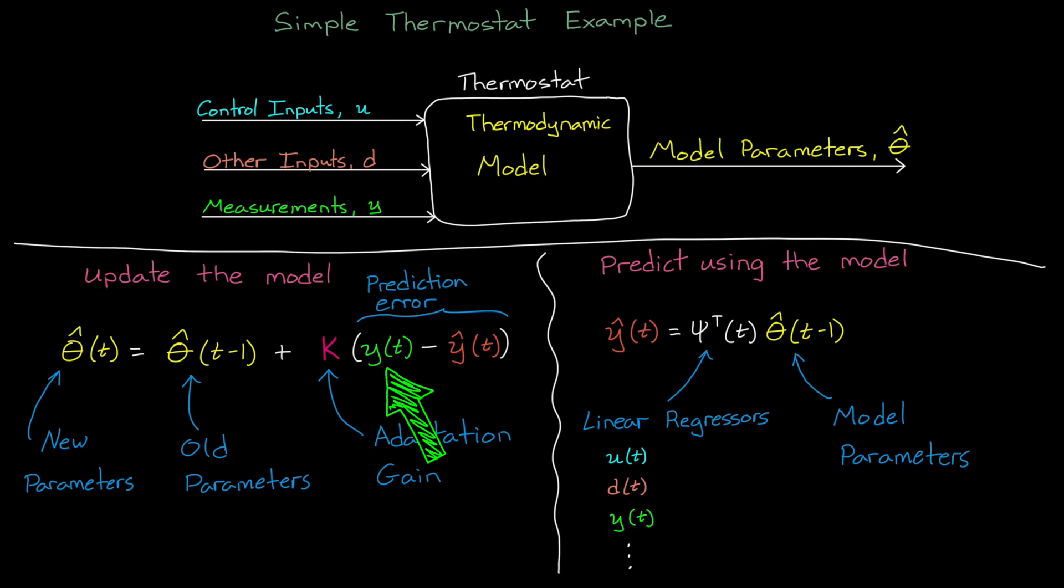Then in the next time step, a new set of measurements come in, which are compared to the new prediction from the model. That error is then used to update the parameters again, and it keeps doing this until it converges on the model.